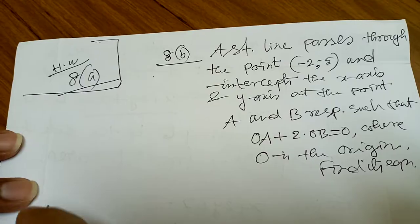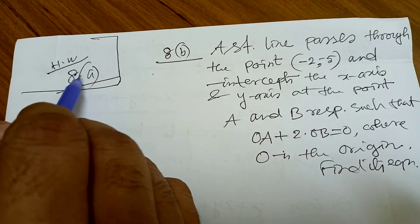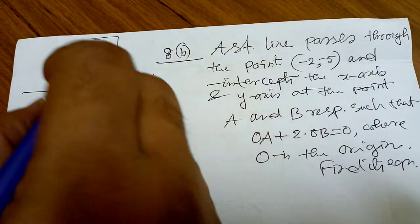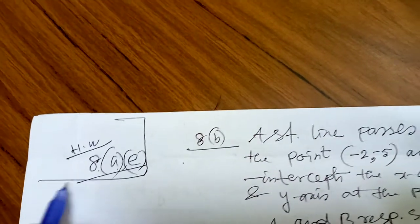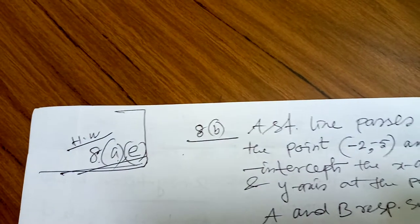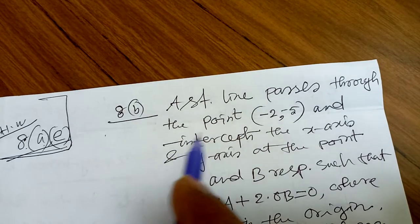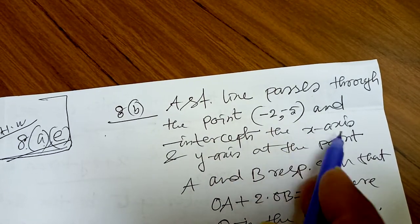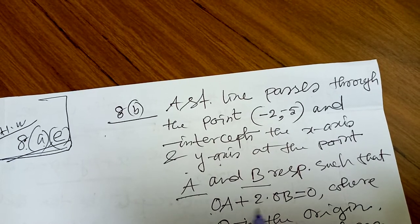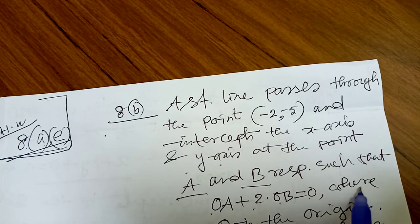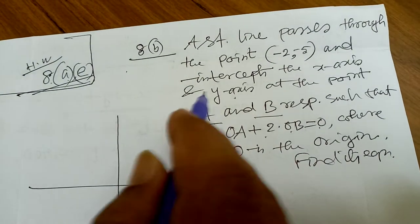So that question is finished. For homework, questions 8a and 8e are given to you. Now I am going to solve 8b: a straight line passes through the point (−2, −5) and intercepts the x-axis and y-axis at points A and B such that OA + 2·OB = 0, where O is the origin. Find its equation.